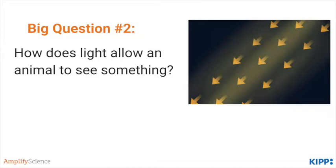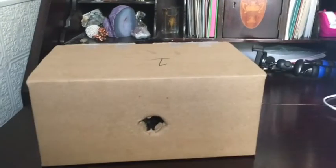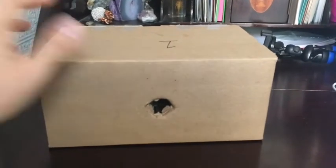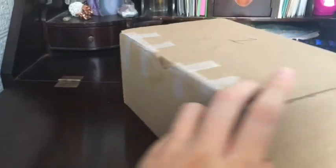On to big question number two: how does light allow an animal to see something? Students will work with a mystery box — a box completely sealed except for one hole so that no light can get in. When you look through the hole, you don't see anything inside. The idea is to teach students that without light, we cannot see anything. But if we open the box and add light from the other side, we get to see what special creature is inside — Spruce the sea turtle!